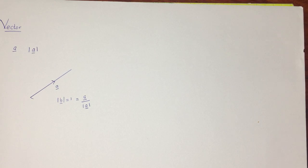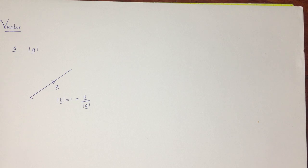After that, we learned about multiplication and addition of vectors. For addition, we used the triangular law. After that, we learned about two product methods: one is the dot product and the other is the cross product.